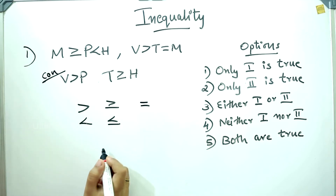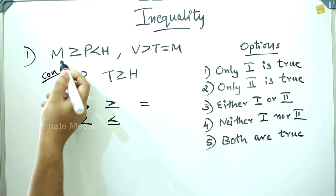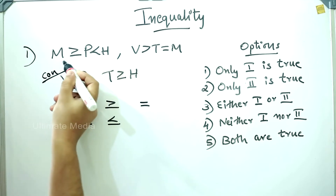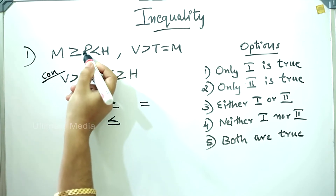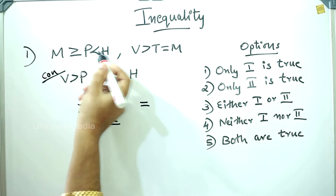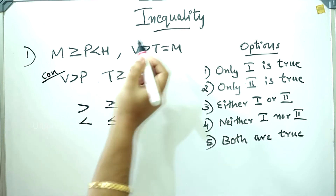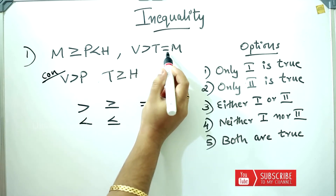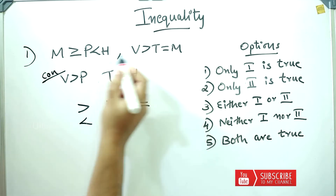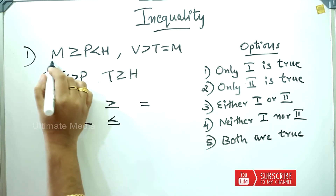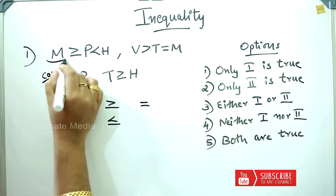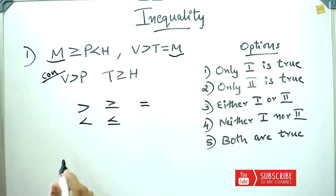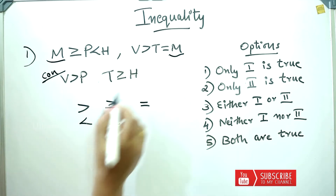Here is a question. First question — how do we do this? This is M: M greater than or equal to P, less than H. Here is another one: V is greater than T, equal to M. What did we do here? Here is M.